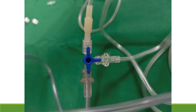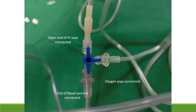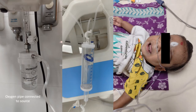The three-way stopcock is now connected: one end to the open end of the IV pipe, another end to the oxygen pipe, and another end to the appropriate-size nasal cannula. Attach the other end of the oxygen pipe to the central oxygen supply and keep a flow of at least four to six liters per minute.